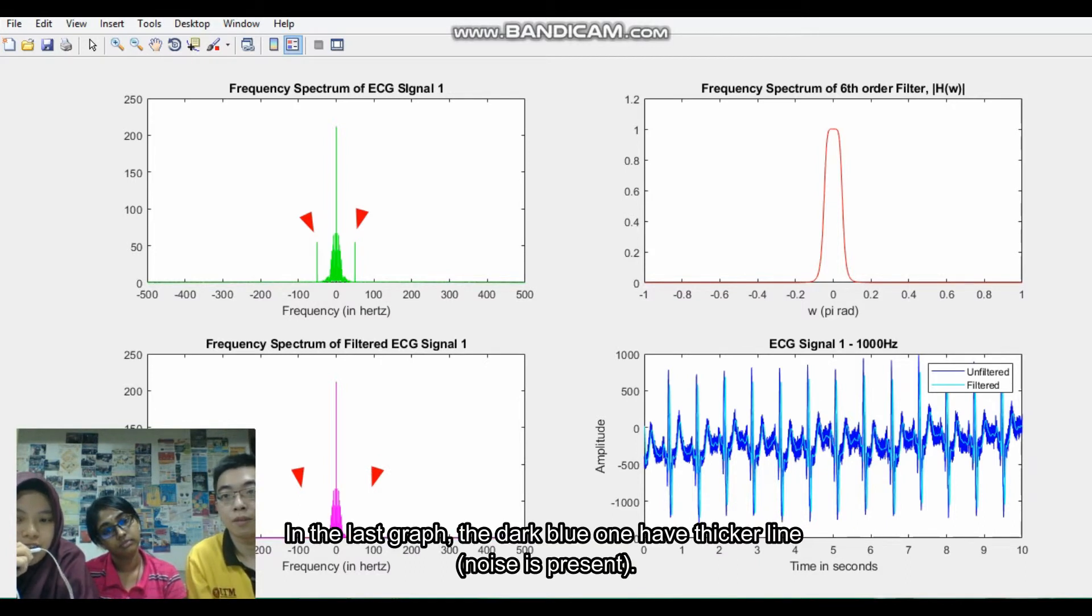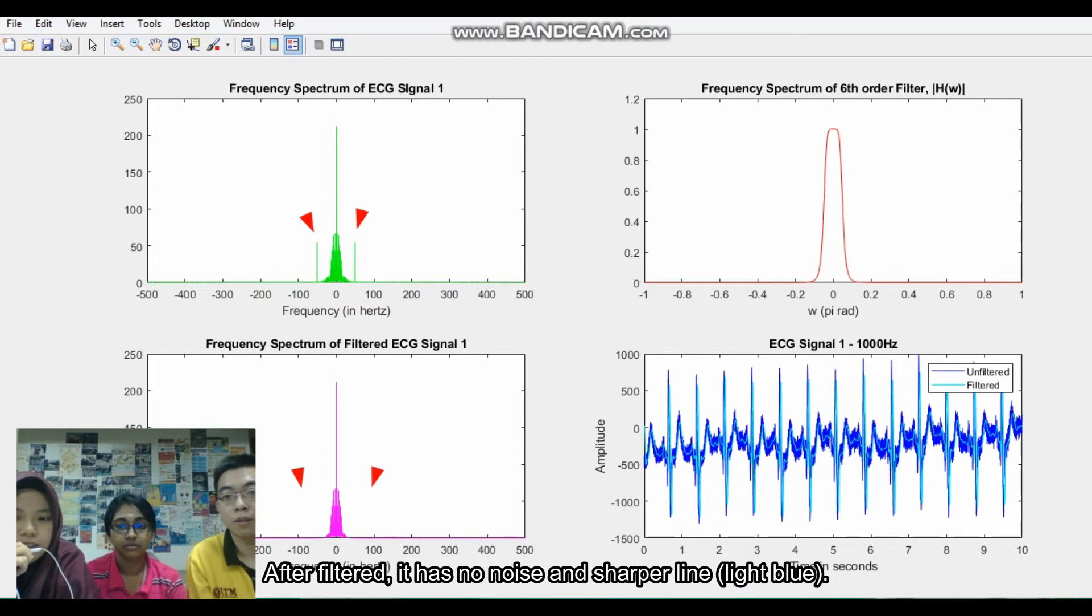The last graph shows the dark blue one, has a thick line and has noise. And after the filter, they have no noise at the sky blue line and have a sharp line.